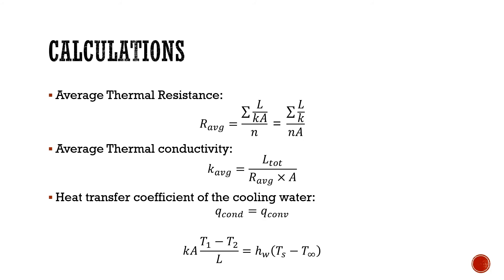Next, we find the average thermal resistance. This is formed by R_average equal to the sum of all L divided by K times A, divided by the number of bars. Since the cross-sectional area A remains constant, we can say this is the sum of the lengths over the conductivity, all divided by the number of bars times the area. Next, we have the average thermal conductivity, formed by K_average equal to the total length over the average thermal resistance multiplied by the area. As you can see, the average thermal conductivity and the average thermal resistance are related.